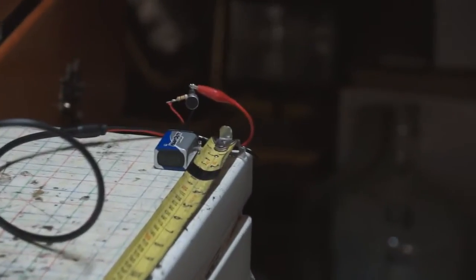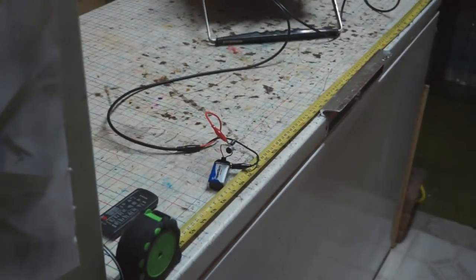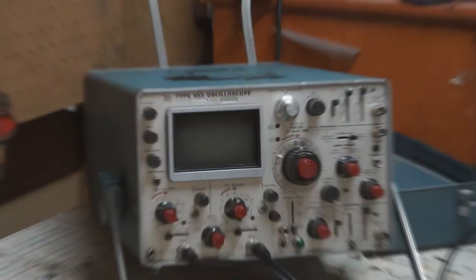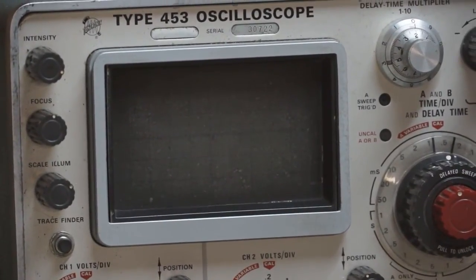I have two microphones here set up one meter apart measured on this tape measure and they're both hooked up to an oscilloscope. So if I snap my fingers by the close microphone there should be a delay in the traces on the oscilloscope because it takes time for the sound to get from one end of that tape measure to the other.